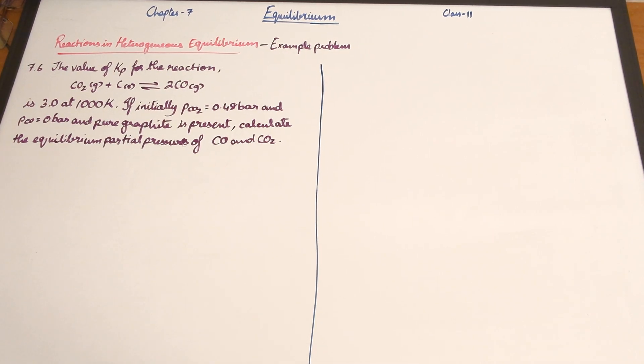In this video we are discussing question number 7.6 given in the textbook, which is on page number 204. In the previous video we discussed reactions and heterogeneous equilibrium.